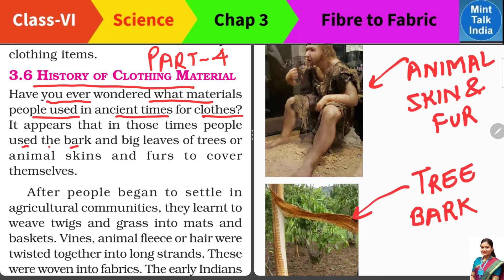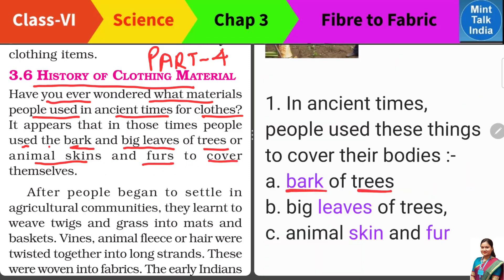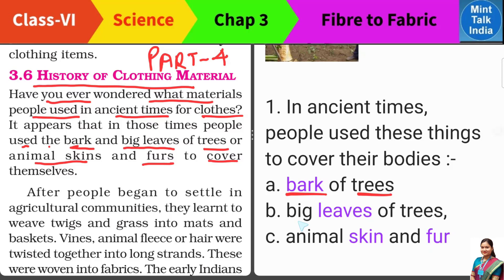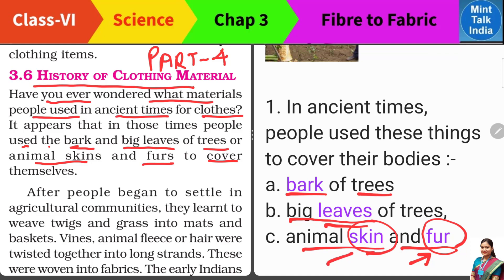In ancient times, people used the bark of the trees and the big leaves of the trees to cover their bodies, and then they also used animal skins and animal furs to cover themselves. कई पेड़ों के जो bark होते हैं — stem का बाहर वाला portion जो बहुत मोटा होता है — वो हवा से भी बचाता है और सर्दी से भी। उसी तरह कई पेड़ों के पत्ते बहुत बड़े-बड़े होते हैं, तो वो भी as a body cover Stone Age के लोग use करते थे। Animal skin और fur से उन लोगों को ठंड में भी बचाव मिलता था, और Stone Age वाले लोगों को लगा कि अगर skin animals को cover कर रही है, तो उससे हम कपड़े बना के पहनेंगे तो हमारी body भी cover हो जाएगी।